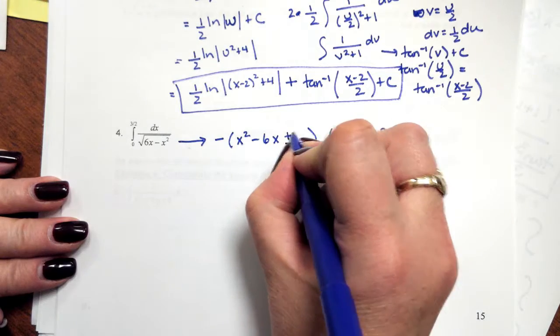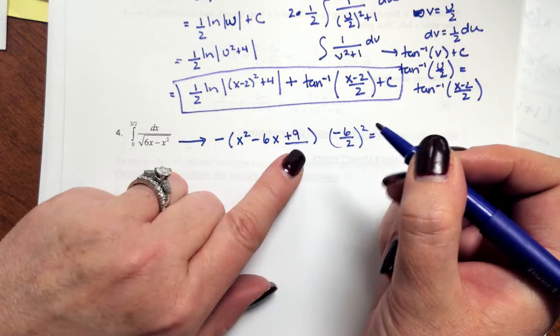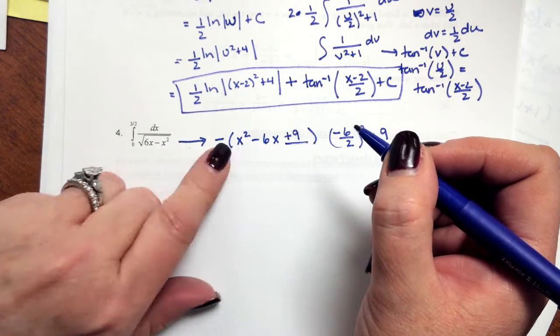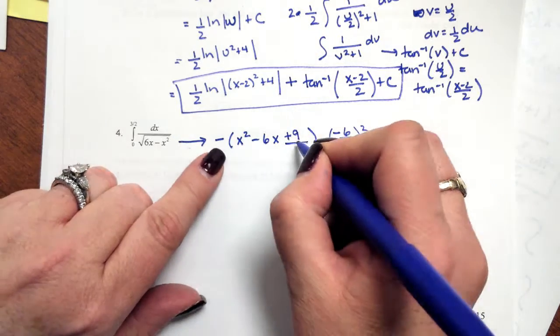So I'm going to add 9 inside the parentheses, but really what I've done here is I've subtracted. This is really a negative 9 once I distribute it.